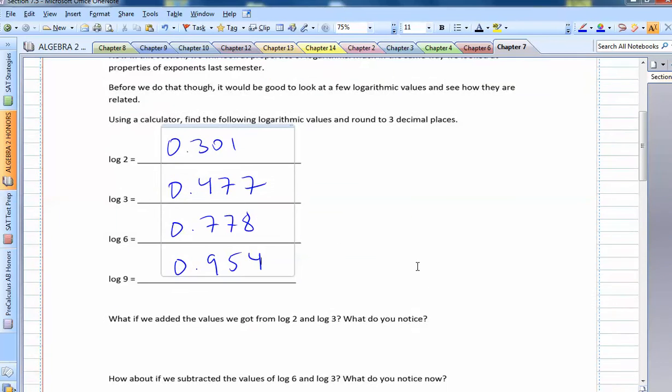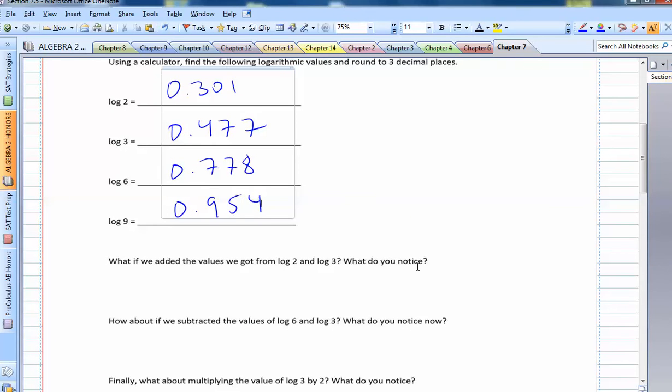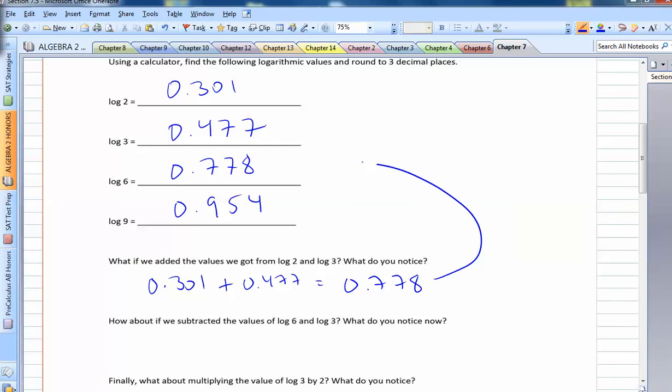So right below, we have three questions. What if we add the values we got from log 2 and log 3? So log 2 was .301. Log 3 was .477. If I add those two numbers together, of course I get .778. Well, what do you know? It's the same thing as log 6. So that's interesting. That means that log 2 plus log 3 equals log 6.